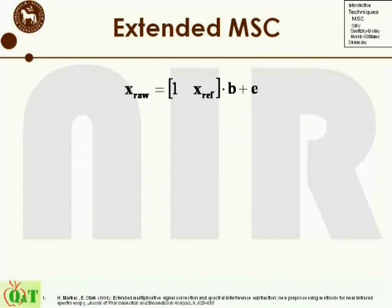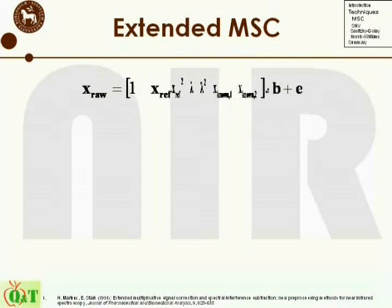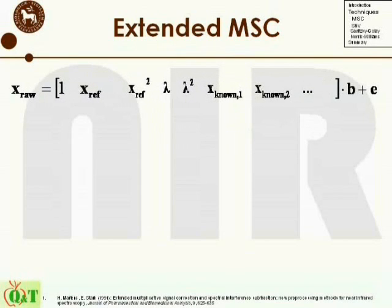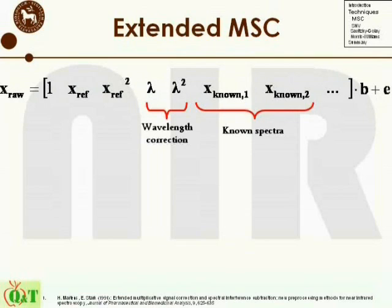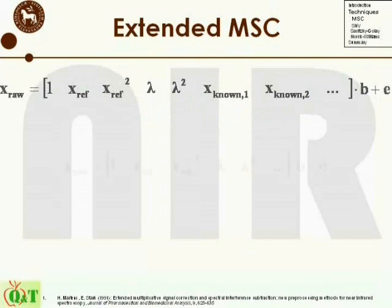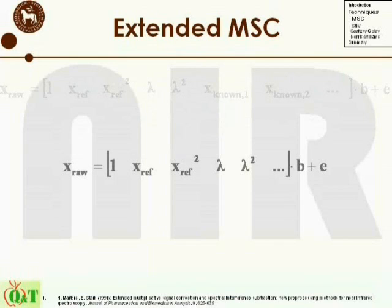Looking at the parameters for the basic MSC written in matrix form, it only includes a column of 1s and a column of the reference spectra. The simplicity of this formulation is that it is possible to add columns to this matrix — normally wavelength correction is added, but also other expansions are possible, like known spectra of either wanted or unwanted character. However, in practical applications, it is often difficult or impossible to extract such pure spectra. Therefore, the most useful expansion to the basic MSC is increased polynomial reference correction and/or wavelength correction of different polynomial orders.